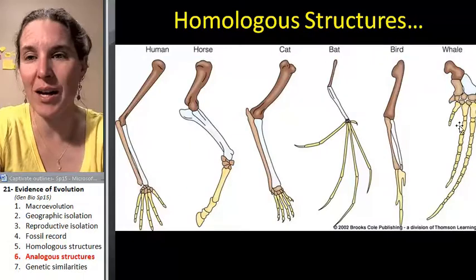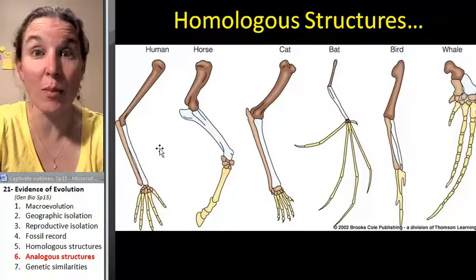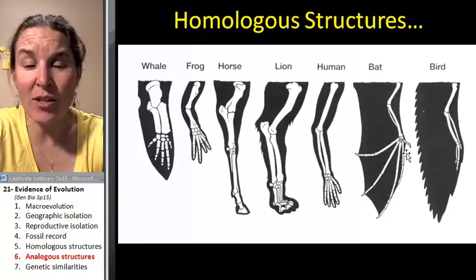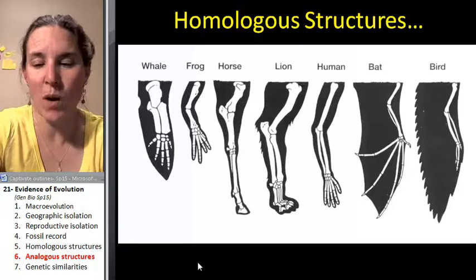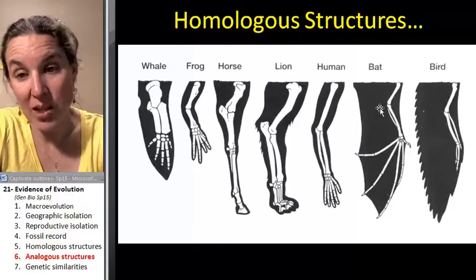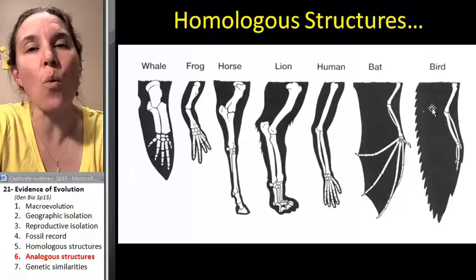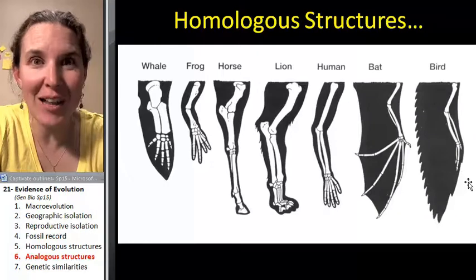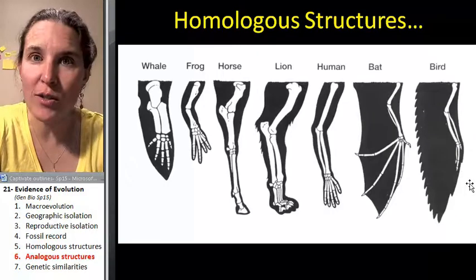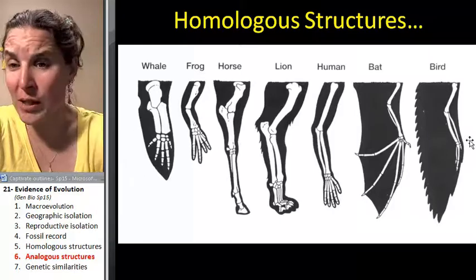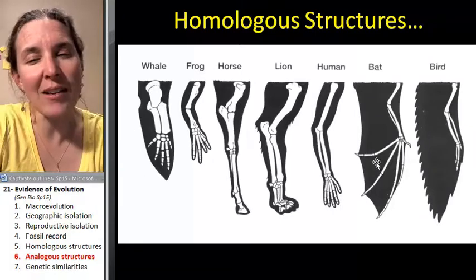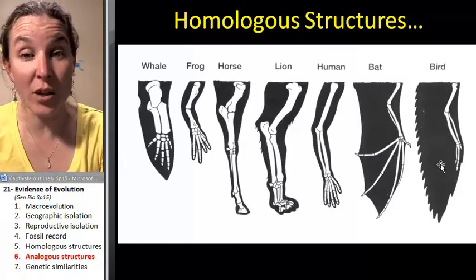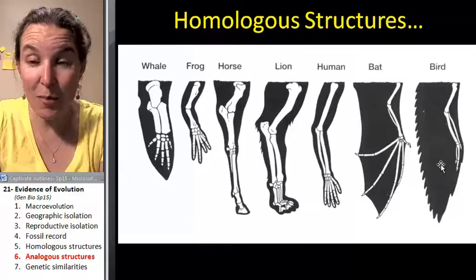We've got a nice view again — the whale, the bird, the bat, the cat, the horse, the human — look at them with all their different limbs. The wing is analogous, but the bones are homologous. The bones indicate they're more closely related. All of these animals are closely related to each other, but the fact that the bat and the bird both have wings does not mean they are the most closely related critters in this list.